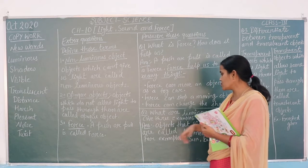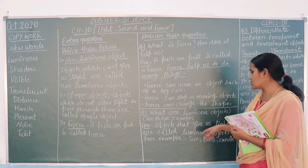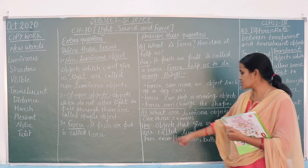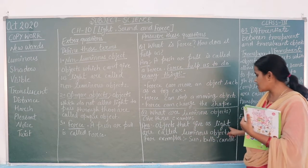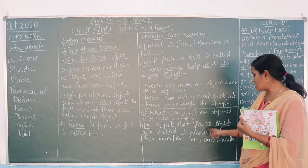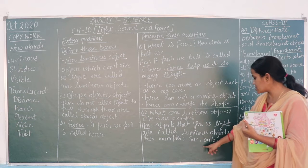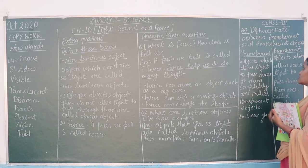Question number two: what are luminous objects? Give three examples. A luminous object is an object that gives us light. For example, the sun, a candle, and fire.